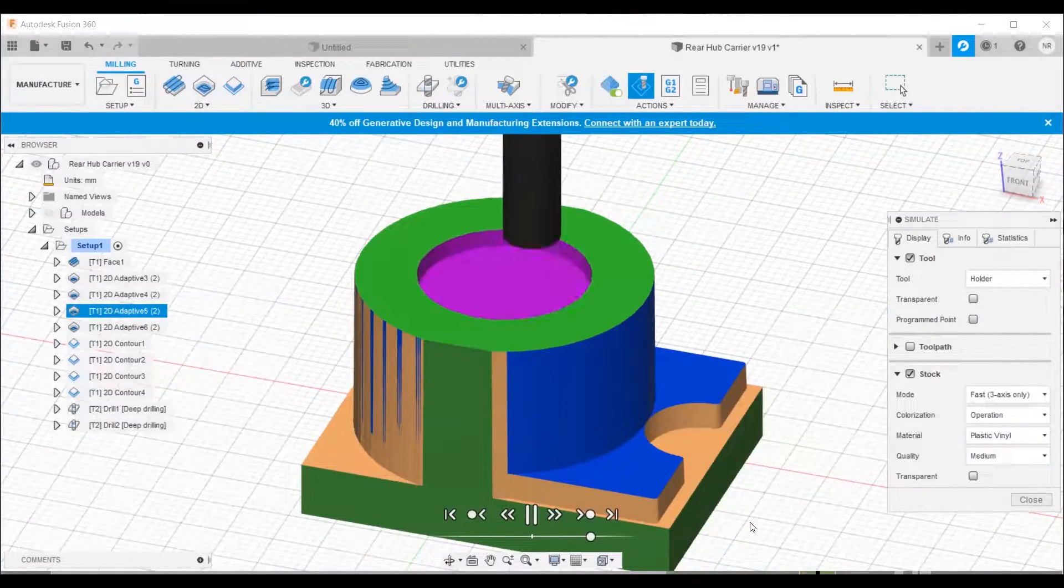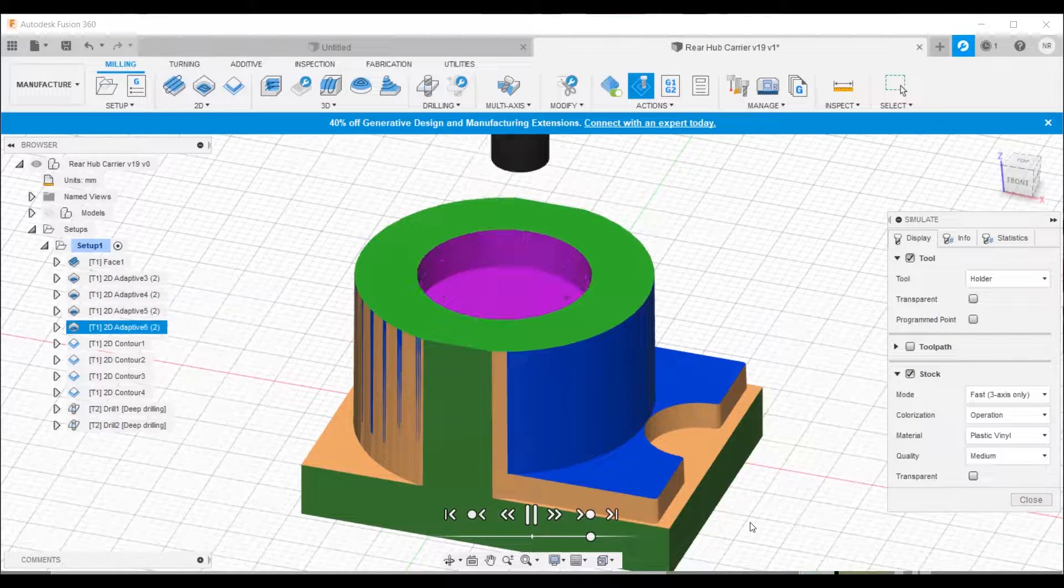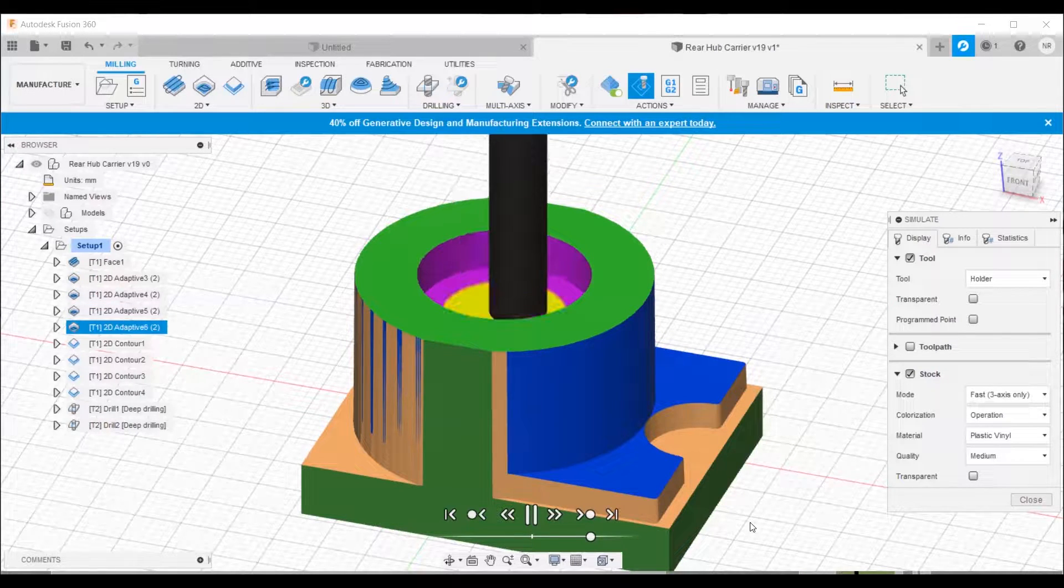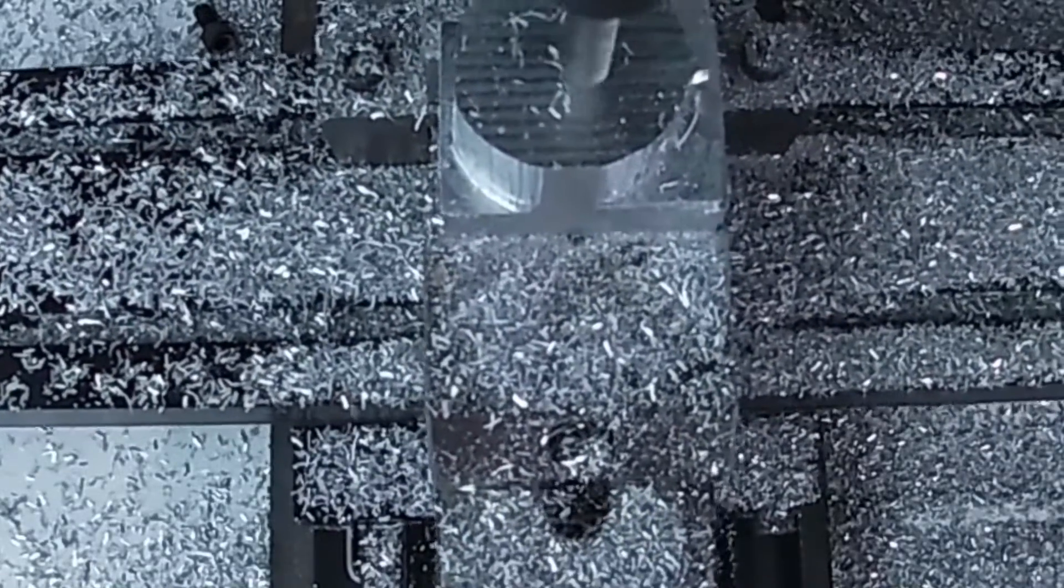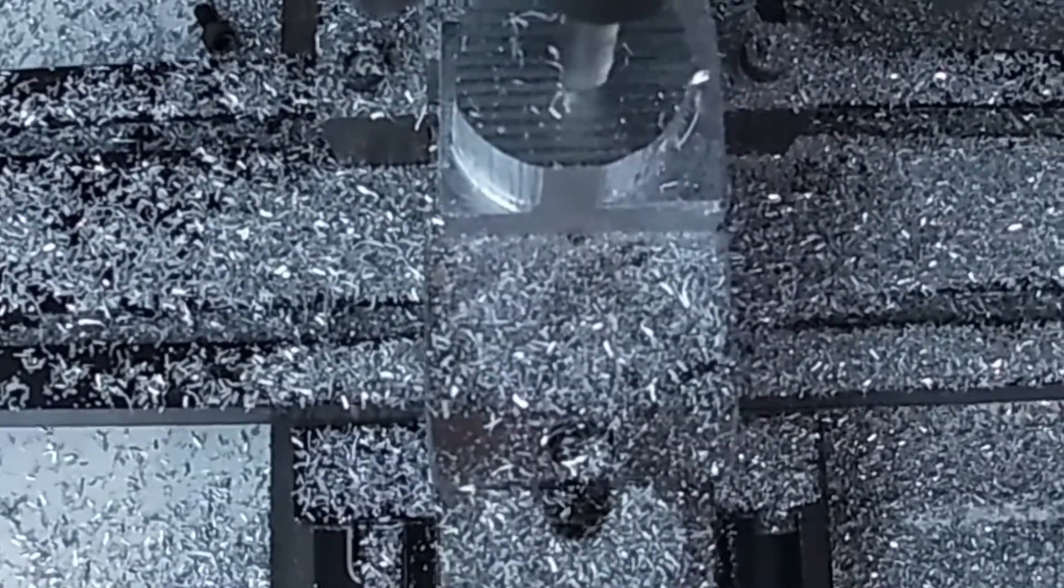And then once that was done, there was a pocketing operation carried out in the center of the part to create space for the bearing and the drive shaft that would come in from the rear of the part later on.